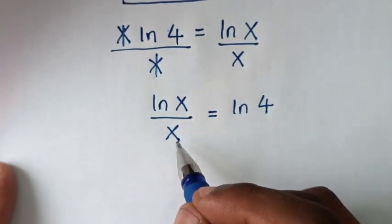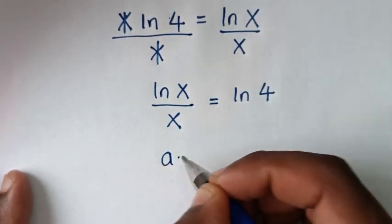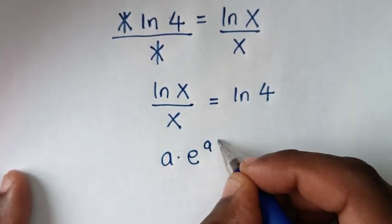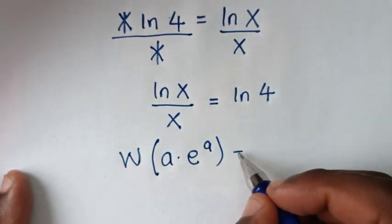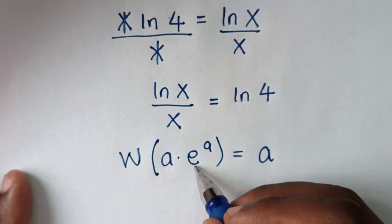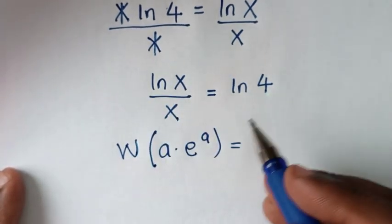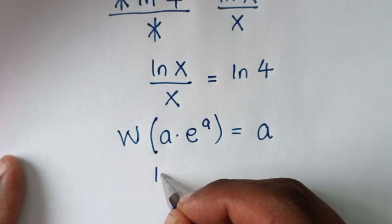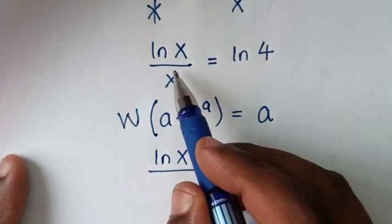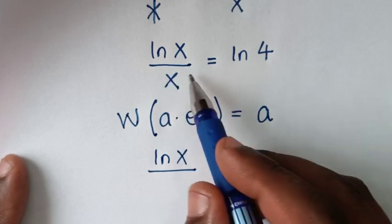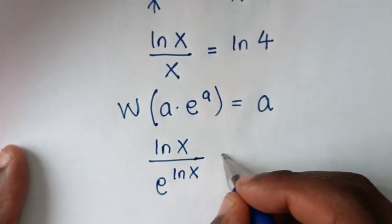In the next step we'll apply the Lambert W function, where the function is in the form of a times e to the power of a, which equals a when W is applied. In our equation, we rewrite x as e to the power of ln(x), so we have ln(x) over e to the power of ln(x) is equal to ln(4).